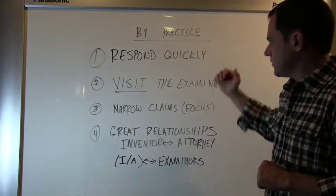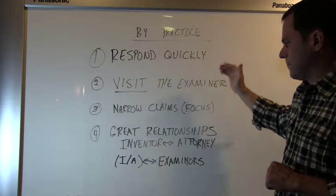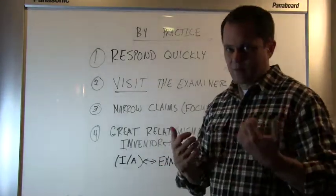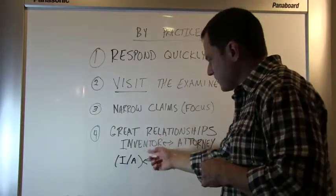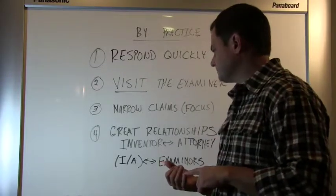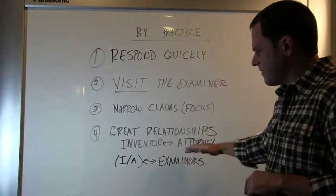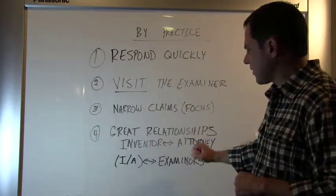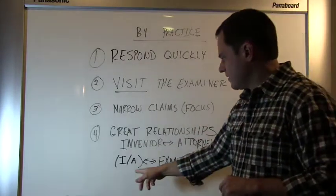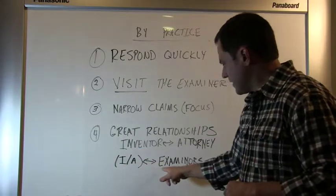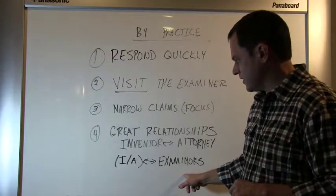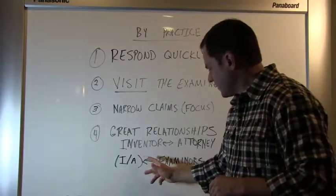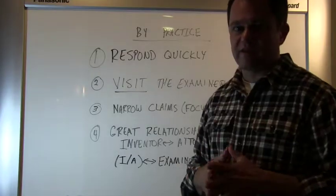The fourth part to accelerating your patent applications examination by practice is to maintain great relationships. This means between you and your patent attorney or patent agent. We're on your side. They're on your side. Maintain this relationship through regular communication, financially, and really focus on viewing this relationship as a cooperation. You're on the same side. Make it work. The second part of great relationships are between you, the inventor and your attorney as a group and the patent examiners. The patent examiners and the patent office do not view you as an inventor and your attorney as someone else. They view you as a group. So maintain good relationships with examiners. Take into consideration that the examiners have bad days too.